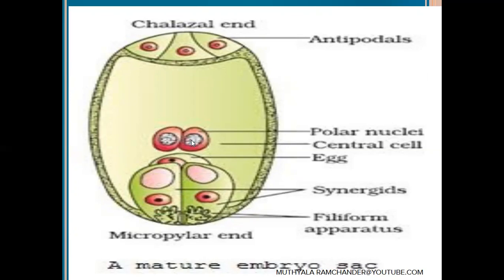The polar nuclei are near the egg apparatus structure. At the chalazal region, three antipodal cells are present. Before or after fertilization, the antipodal cells disappear or degenerate. In the Oenothera embryo sac, antipodal cells are absent.